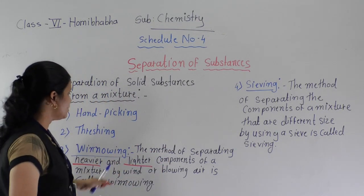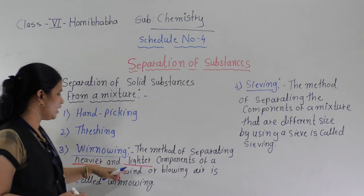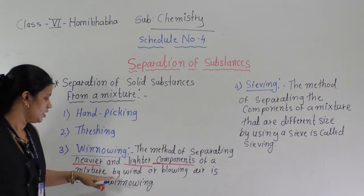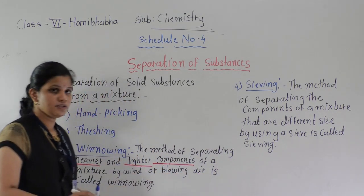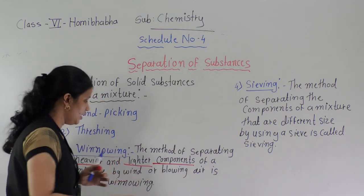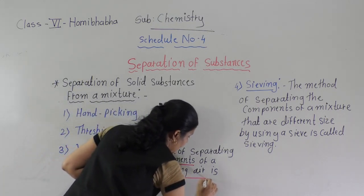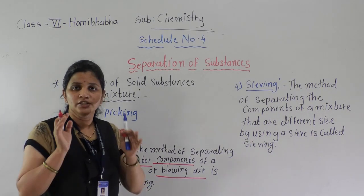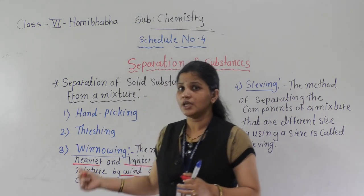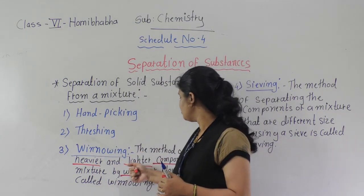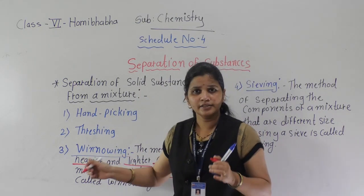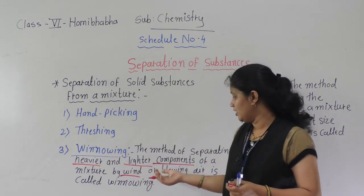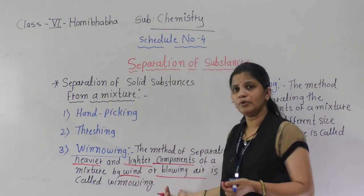The method of separating heavier and lighter components of a mixture by wind or blowing air is called winnowing. It is separated with the help of wind and blowing air. This method is used to separate lighter and heavier particles by wind or blowing air.